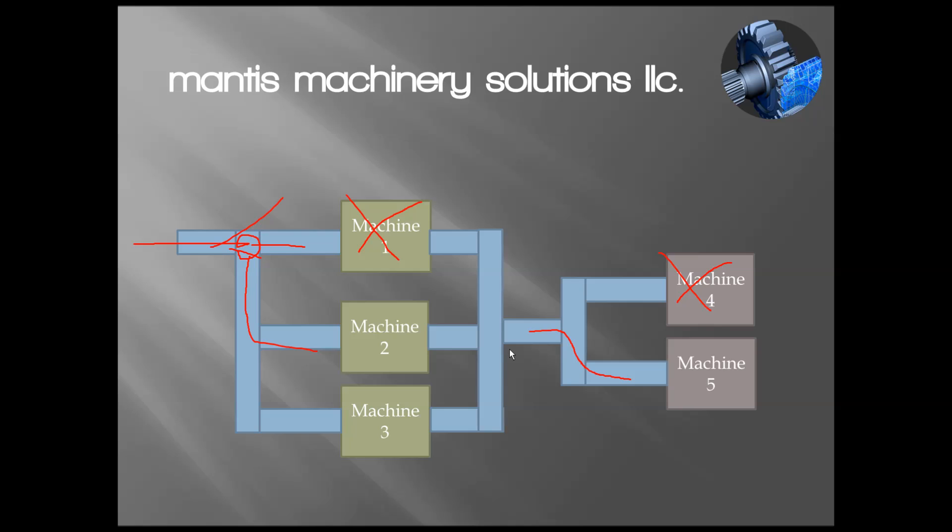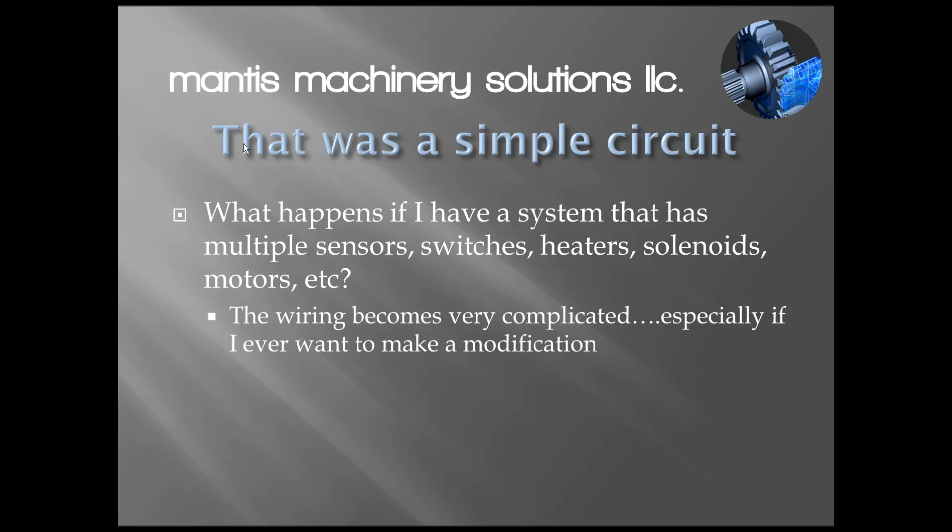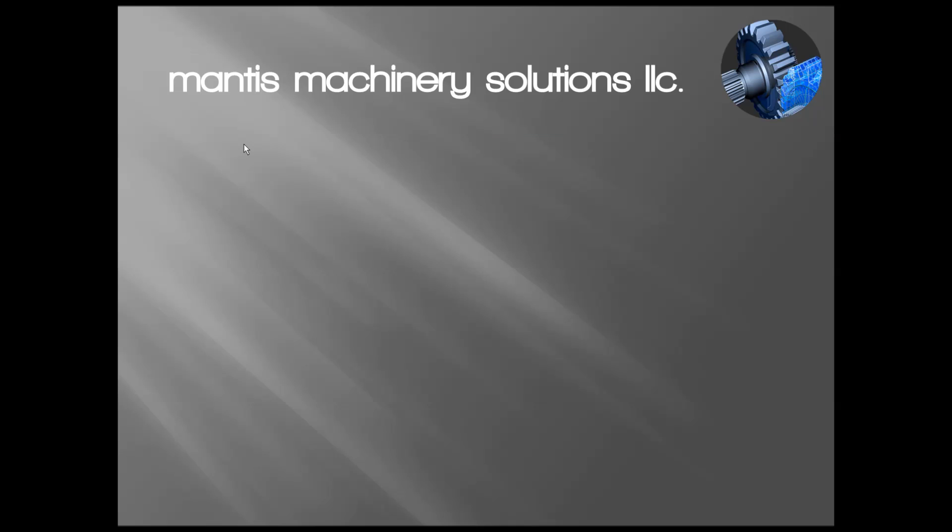Can you imagine the type of wiring and electrical system that would be involved in trying to make this thing work? A lot of contactors and relays because if one condition is made, I'd have to have a contactor that opens and closes the belt going to the next conveyor system. This gets very complicated, especially if I try to change things or add another machine. It would be a nightmare to try to wire this without a PLC.